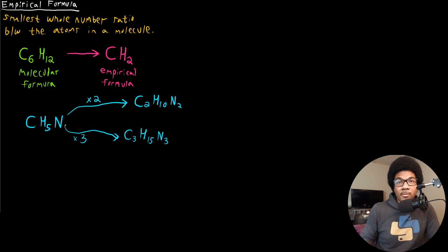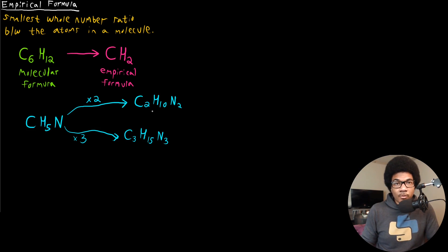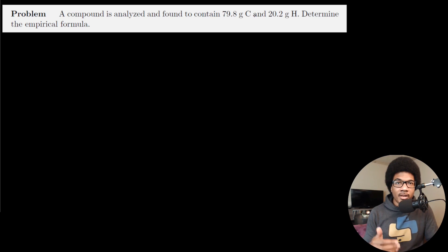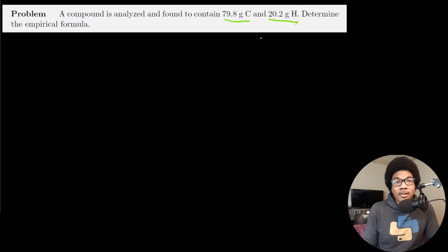So determining the empirical formula from elemental analysis or experimental data will be your first step in determining the molecular formula. In this video, I want to go through a few examples of how we calculate the empirical formula from experimental data. The first example: a compound is analyzed and found to contain 79.8 grams of carbon and 20.2 grams of hydrogen. Determine its empirical formula. This data comes from elemental analysis.